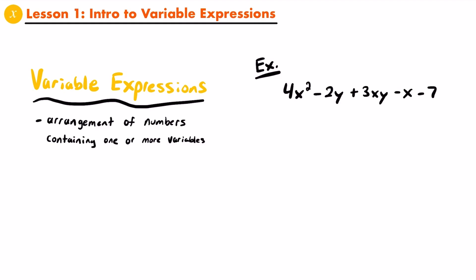Depending on what is included within a term, we might classify it as one of two different types. When a term contains a letter, or a variable, we call it a variable term. And when a term contains no variables — it just has a number — we call it a constant term, or more simply, just a constant, which is how I will most likely refer to them.